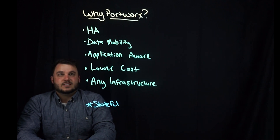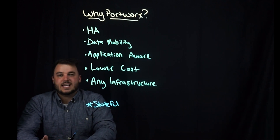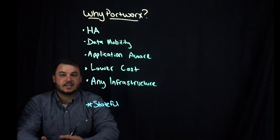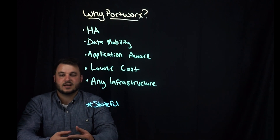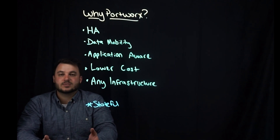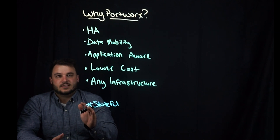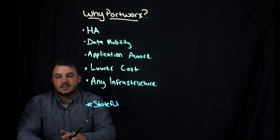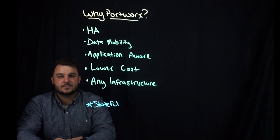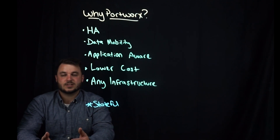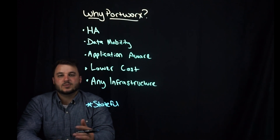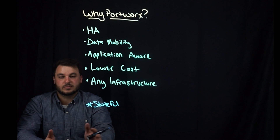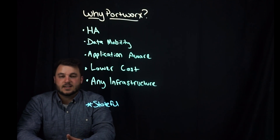Inside a single cluster, providing HA for applications is an absolute must. Portworx keeps replicas in a single cluster and provides high availability if your nodes go down. This works for any infrastructure, on-prem or in the cloud. And because we're application-centric and provide mobility and data management, you can move those workloads from Kubernetes cluster to Kubernetes cluster with a few commands, as well as lowering your costs.